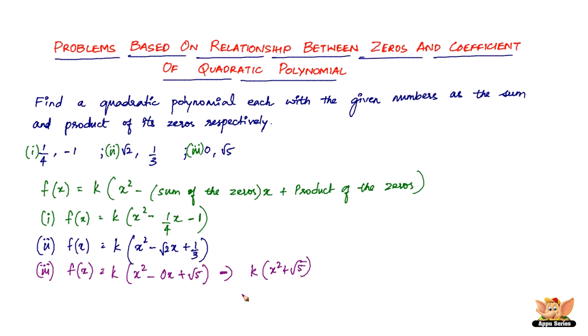So that was a pretty simple problem overall. It will get you a mark or so — it's a very short-answer type question. This ends the set of problems on the relationship between zeros and coefficients of a quadratic polynomial. In the forthcoming videos, let us look into the relationship between zeros and coefficients of a cubic polynomial.